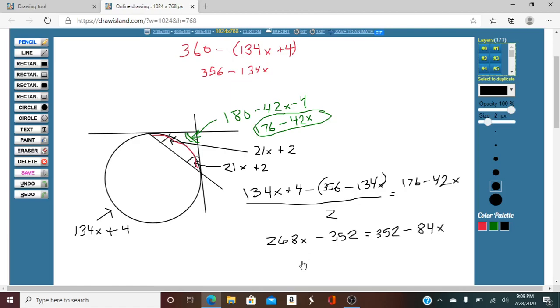We add 84X to both sides, we get 352X. And at the same point, let's move this 352 over here, so we're going to add 352, so it's going to equal 704. And then we divide both sides by 352, we get X equals 2.